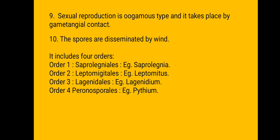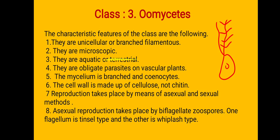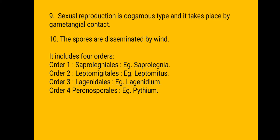The spores are disseminated by wind. These are the characteristics of fungi included in class Oomycetes. They have four orders: order one is Saprolegniales with example Saprolegnia; second order is Leptomitales with example Leptomitus; third order is Lagenidiales with example Lagenidium; and the fourth order is Peronosporales with example Pythium.